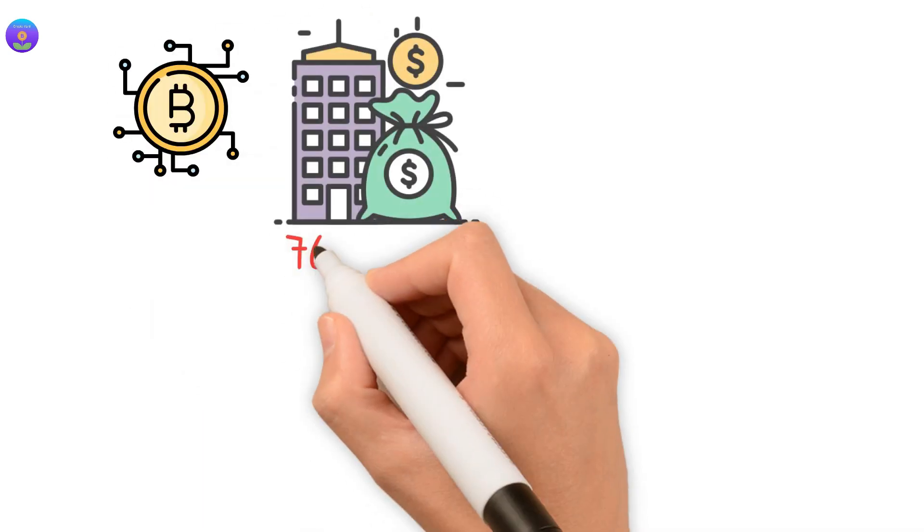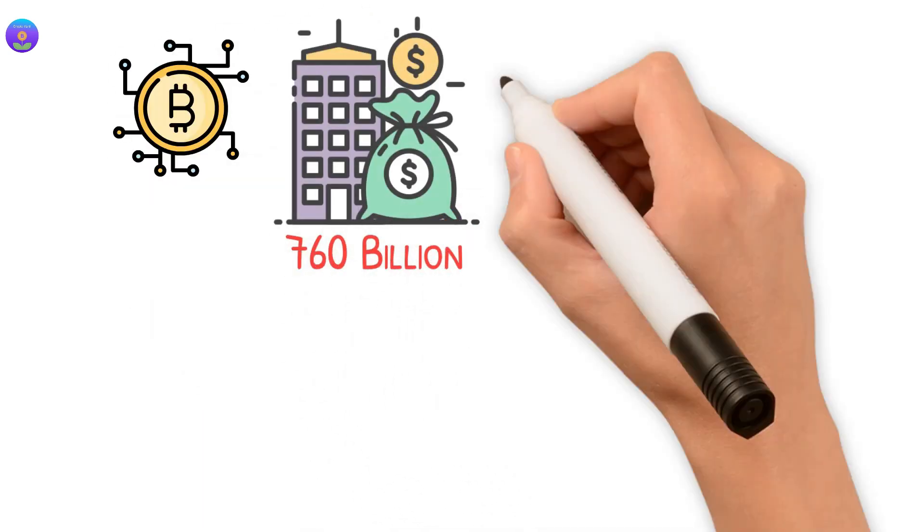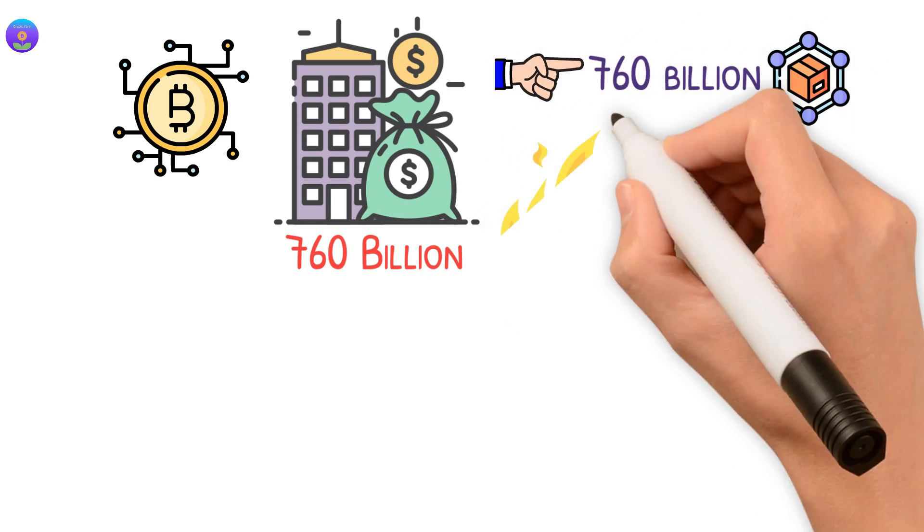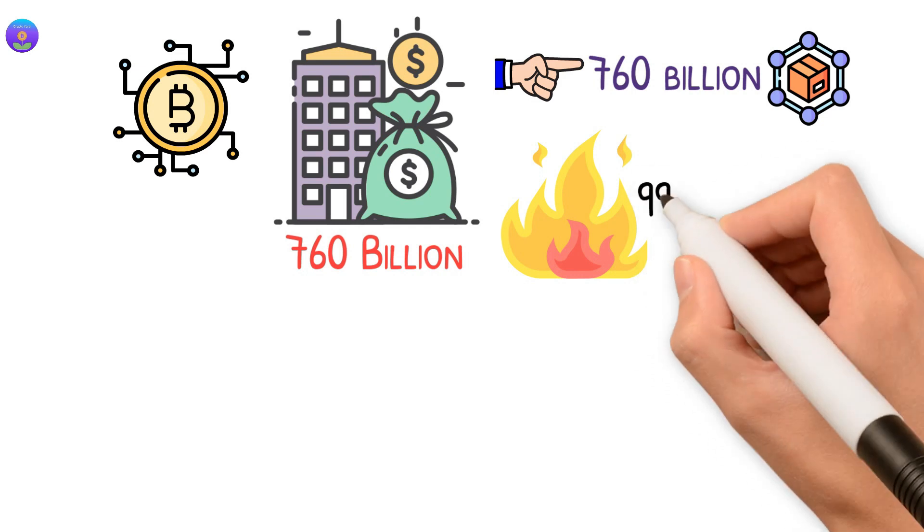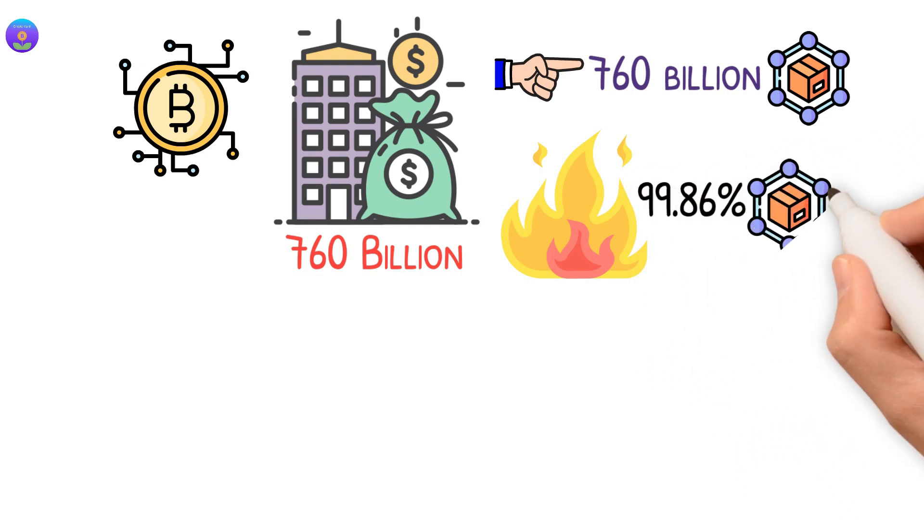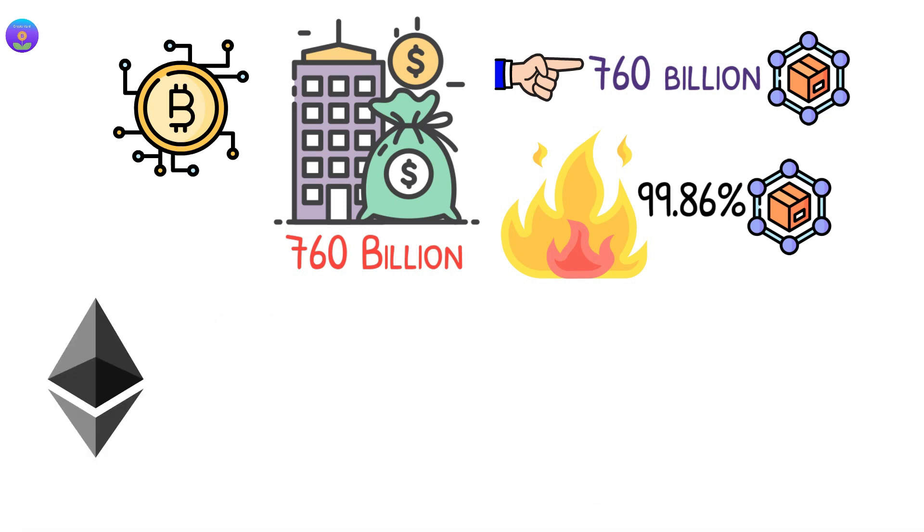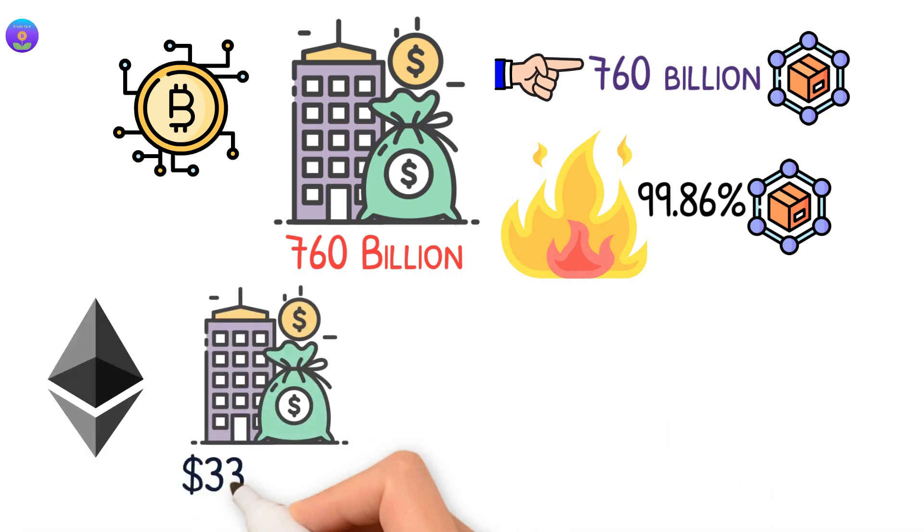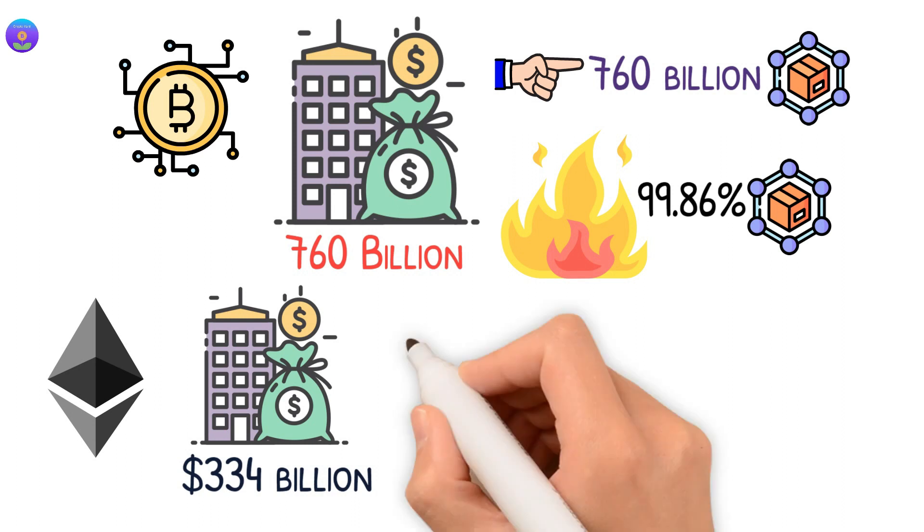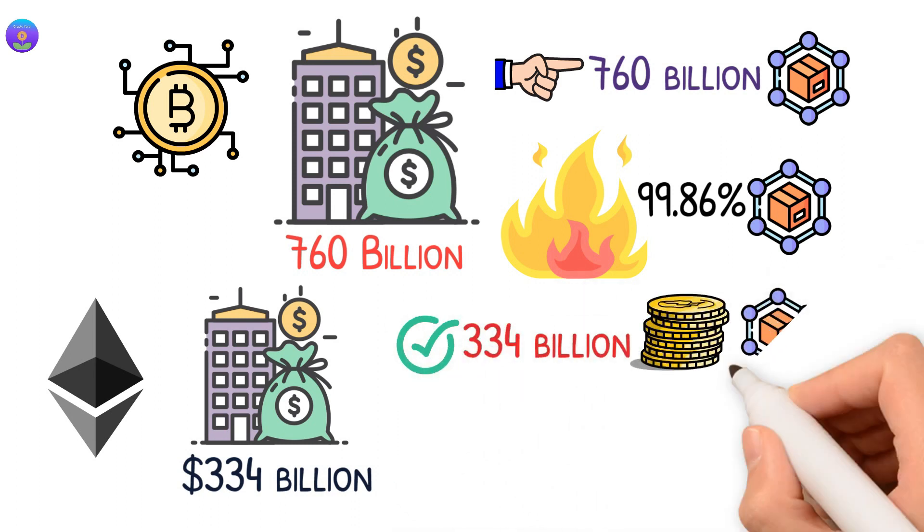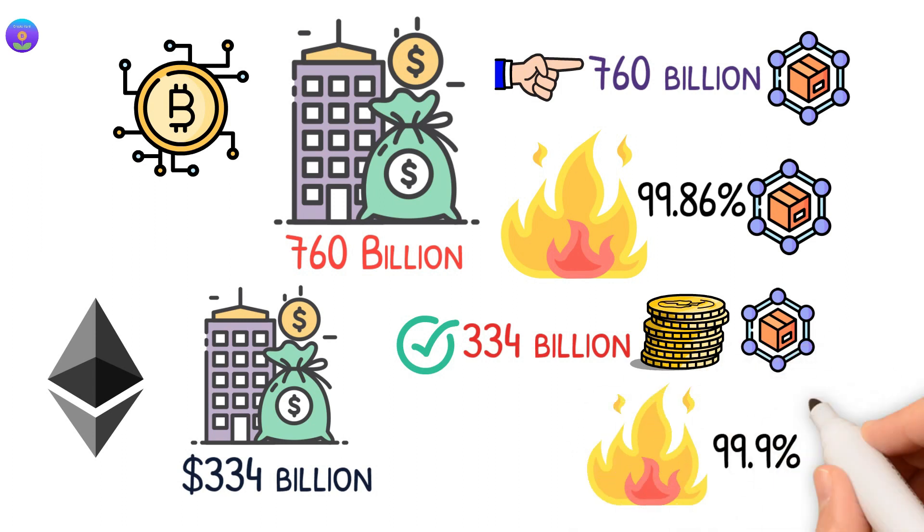To match the Bitcoin market cap, which is around 760 billion, we need 760 billion in the circulating supply, which means we need to burn 99.86% of the circulating supply. And if we need to match the Ethereum market cap, which is around $334 billion, then we need 334 billion tokens in the circulating supply, which means we need to burn 99.9% of the circulating supply.